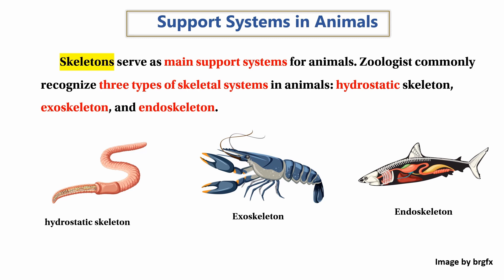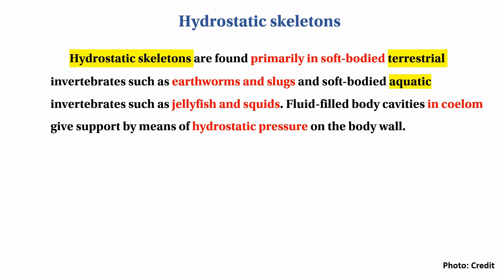The second type is the endoskeleton. The endoskeleton supports the body from within. Hydrostatic skeletons are found primarily in soft-bodied animals such as jellyfish and squid.